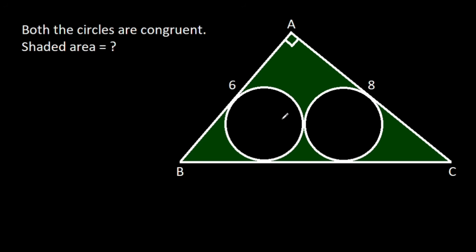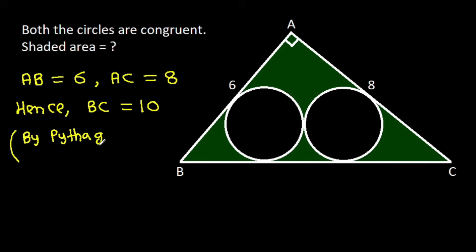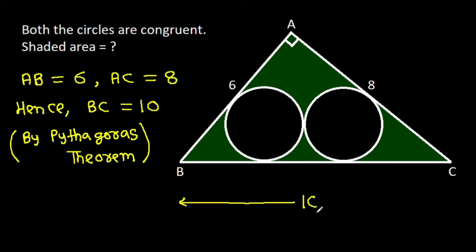In this video, we have to find the shaded area. AB is 6, AC is 8. Hence, BC will be 10 by Pythagoras theorem. BC is 10.